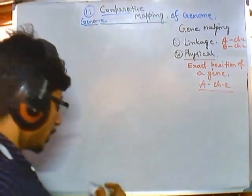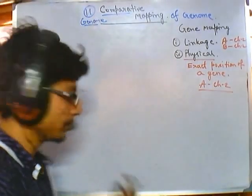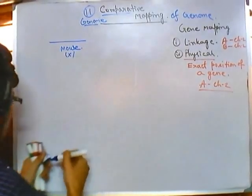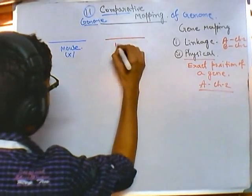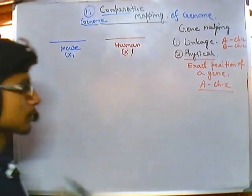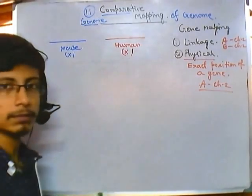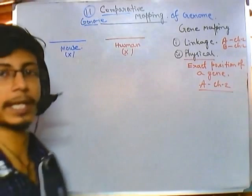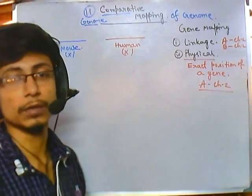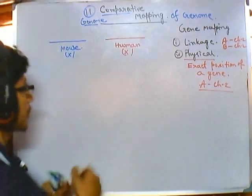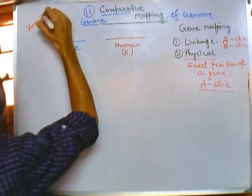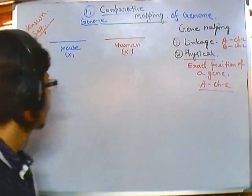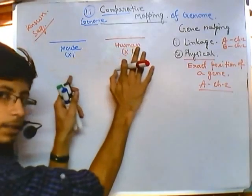Suppose we are comparing two different genomes — one is the genome for mouse and another one is for human. We compare, say, a segment of the X chromosome of the mouse with the X chromosome segment of the human. We must first get the exact map of all the gene sequences before we can do comparative mapping. We can only do this for known sequences.